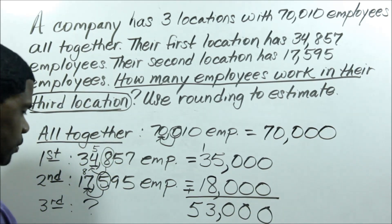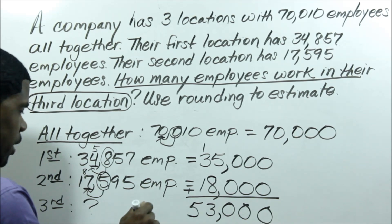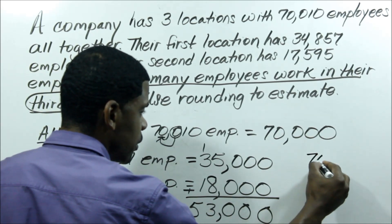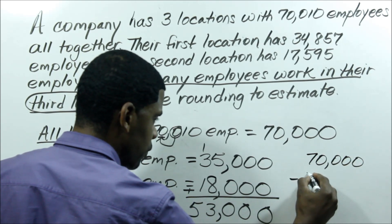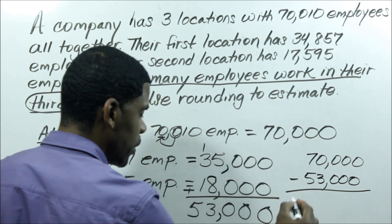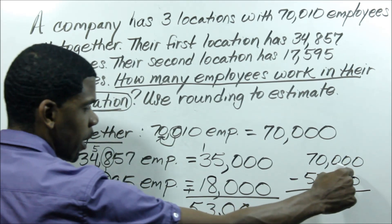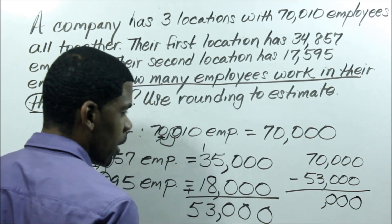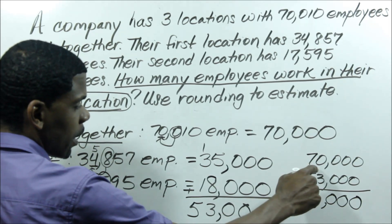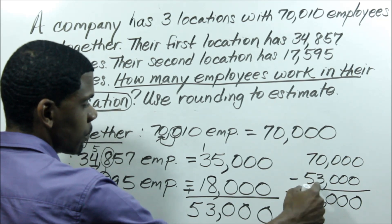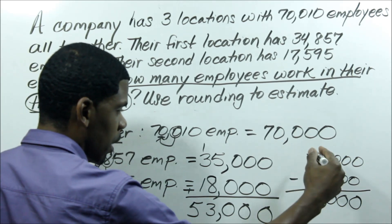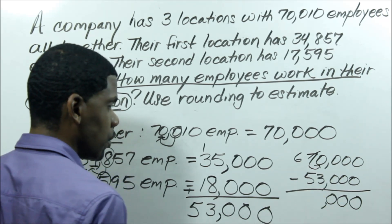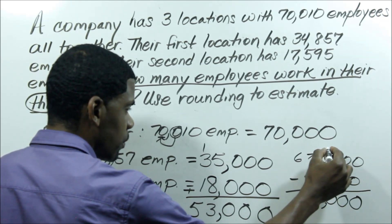Now I take the sum of my first and second locations and subtract it from the rounded total. So I have 70,000 minus 53,000. Since I have zeros in the ones, tens, and hundreds places, I simply write those as zero. I can't subtract zero minus three in the thousands, so I borrow from the ten-thousands place — taking one ten-thousand and moving it as ten-thousands to my thousands place, making it ten.